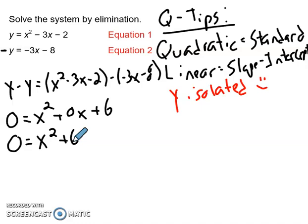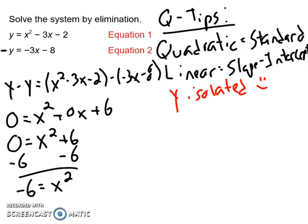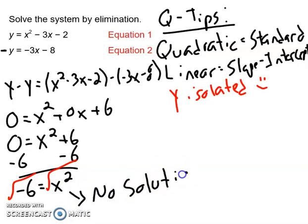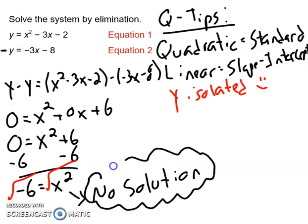We subtract six from both sides: x squared equals negative six. When we take the square root, we see there's a negative under the radical, and we can't have that. So this yields no solution. In Algebra 2, you can have imaginary numbers — it would be plus or minus root six times i — but for Algebra 1 purposes, this is no solution, meaning these two equations don't intersect.